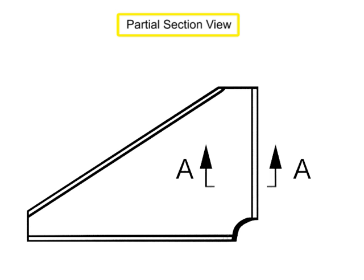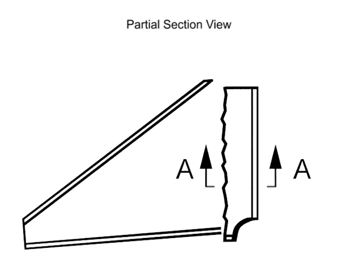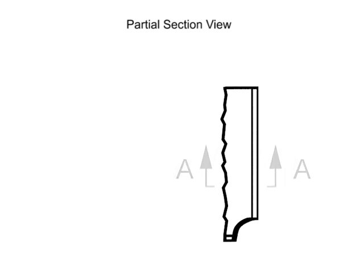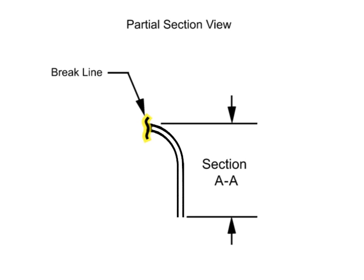A partial section view shows detail of an object without drawing conventional views. The cutting plane line only partially cuts the object, and the section view ends with a short brake line to indicate where the cutting plane ended.